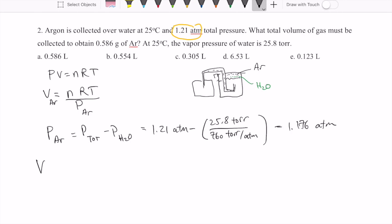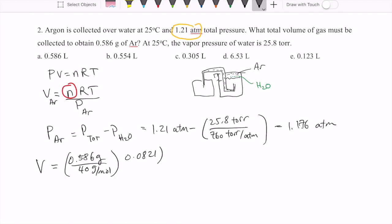Now once you have that, V is going to equal number of moles. Number of moles is mass over molar mass. So I'm going to take the mass of the argon divided by the molar mass, 40, times R. Now I'm not writing out the units here just to save some space, but you want to keep in mind here for temperature that you need to have it in Kelvin. So I add 273 to it, and then the pressure at the bottom is 1.176.